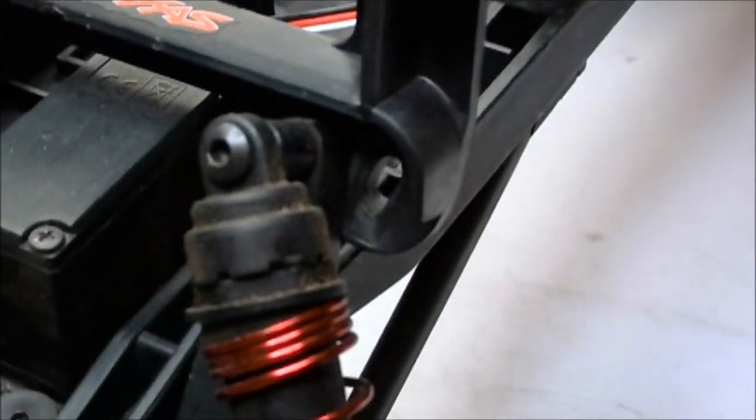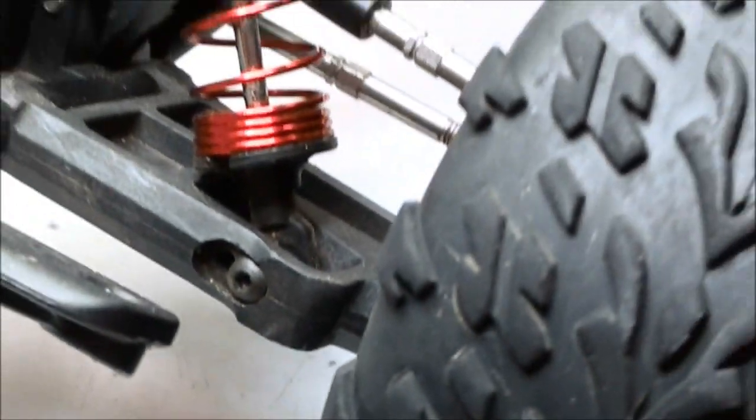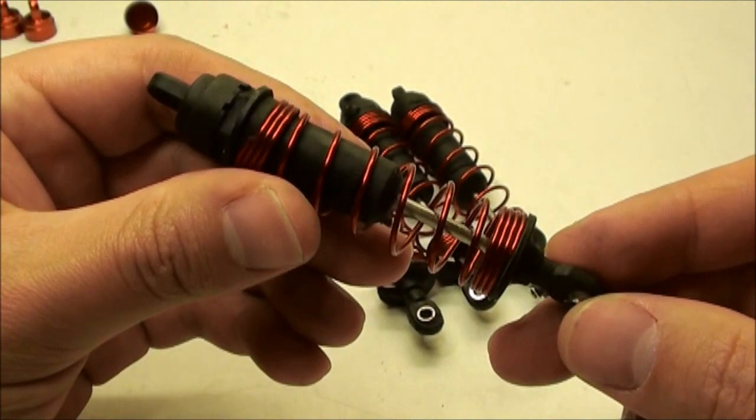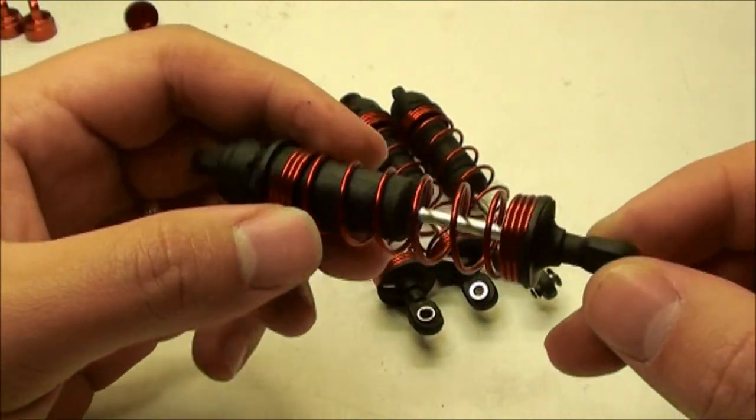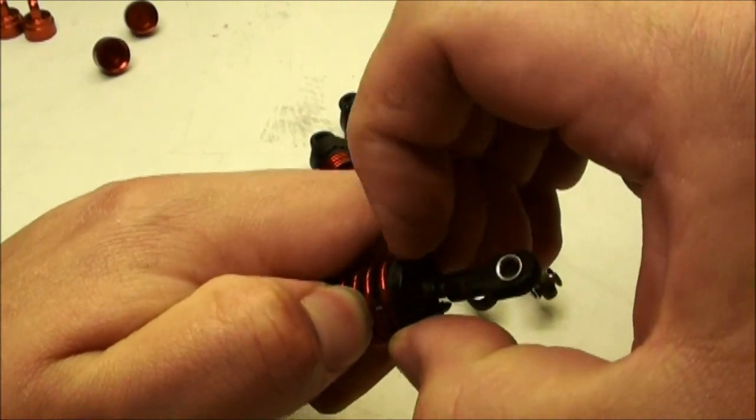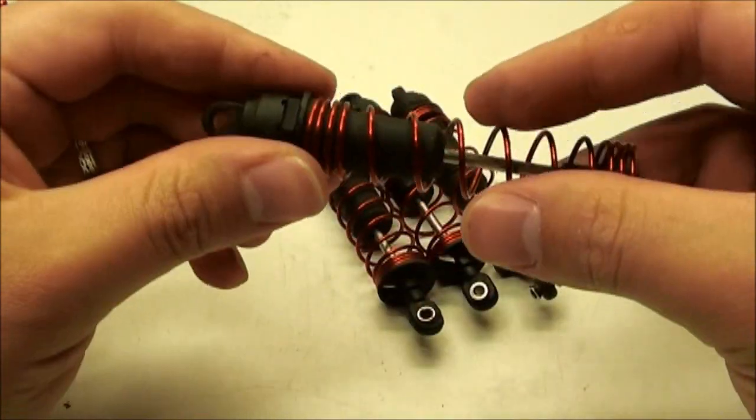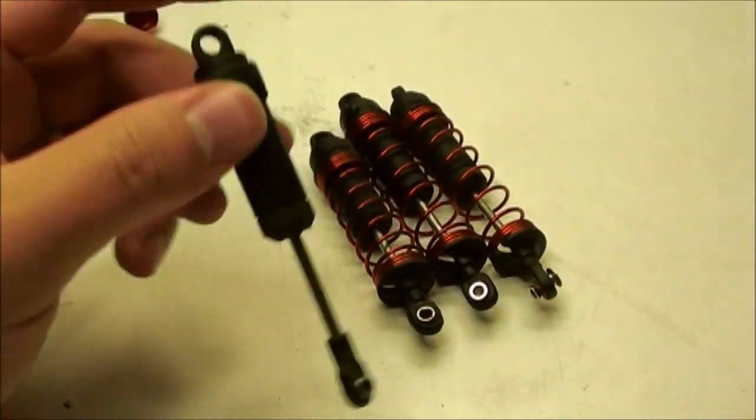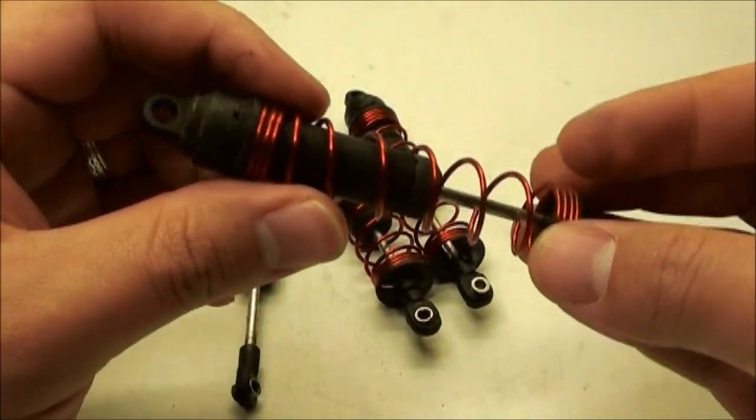So each shock is only held in with two screws, one at the top and one at the bottom. Now that I have all four of the shocks off, it's time to take these apart just to make it a bit easier to put on the shock caps. So I'm going to go ahead and remove the springs, and I'm going to do that with every one of the shocks.